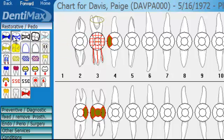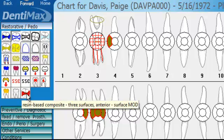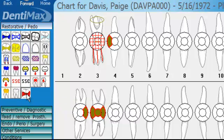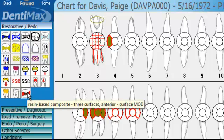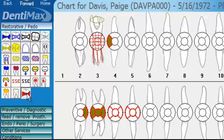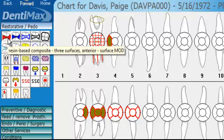Not only can you move your menus around, but you can also move your buttons. Here I have my MOD button for my composites — huge time saver. That's way down here at the bottom of my restorative menu. This button I use all the time, so I might want to drag it here to the top. So very definable.